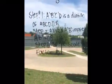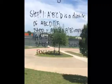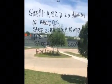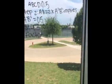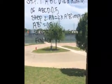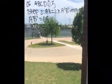Step 1: A'B'C'D' is a dilation of ABCD with scale factor 0.5. Step 2: AB equals 2 times A'B', which implies A'B' equals 0.5. Step 3: So the scale factor is 0.5, and then you go down here and choose.